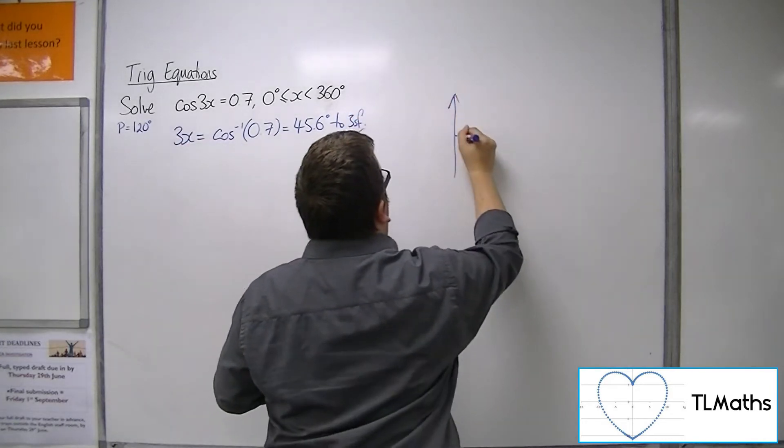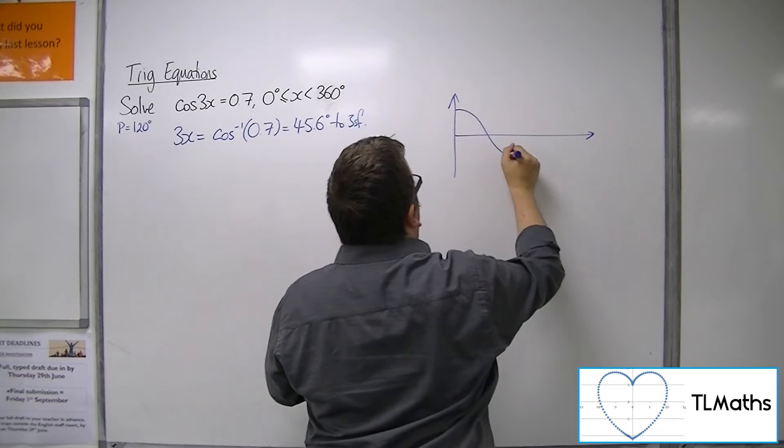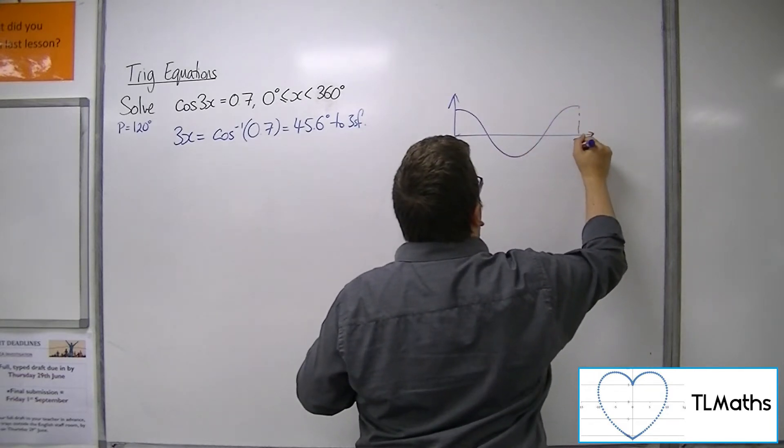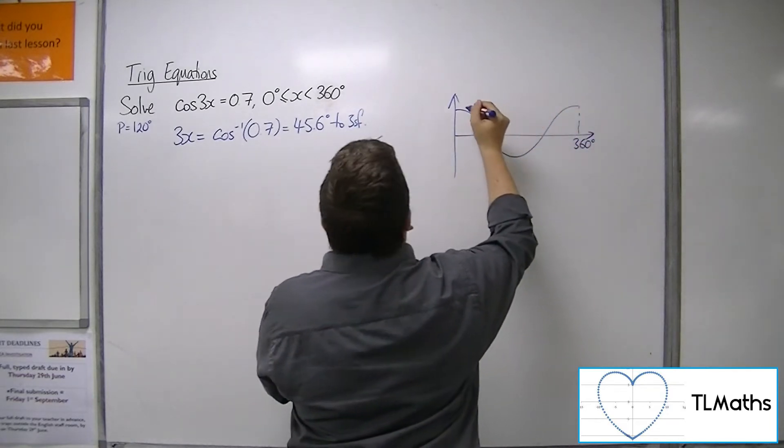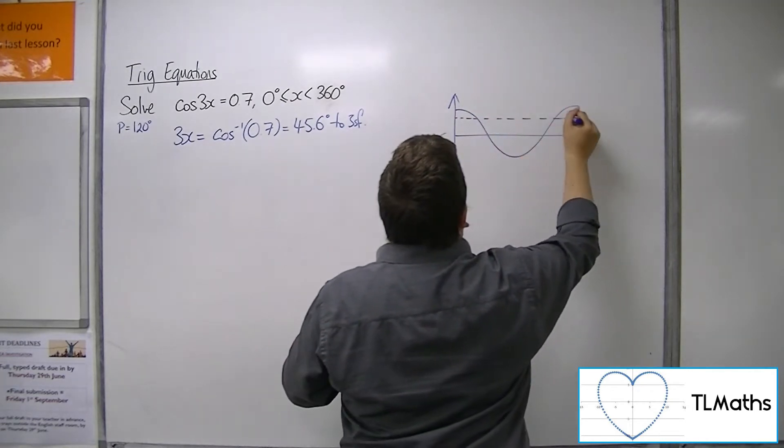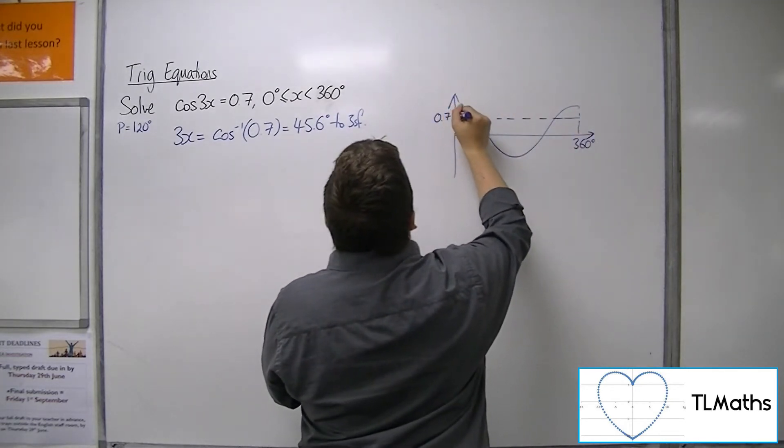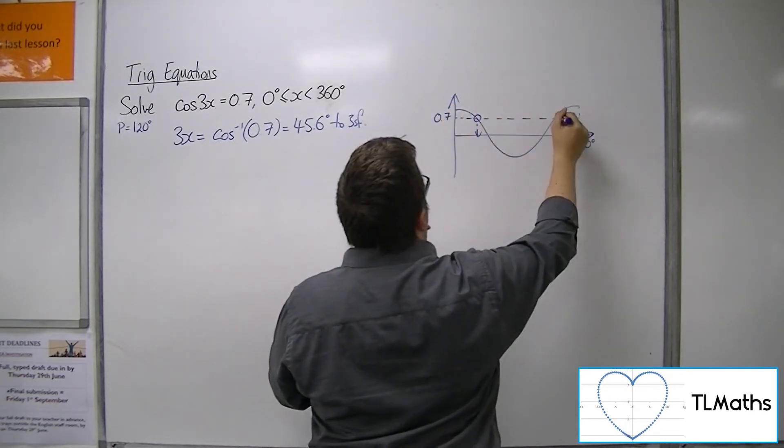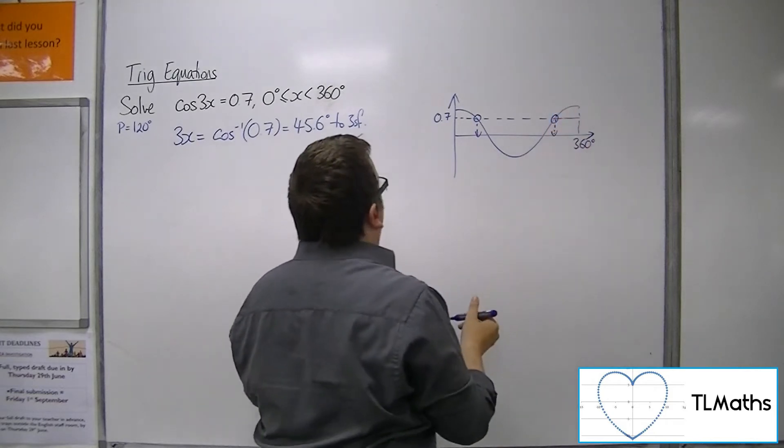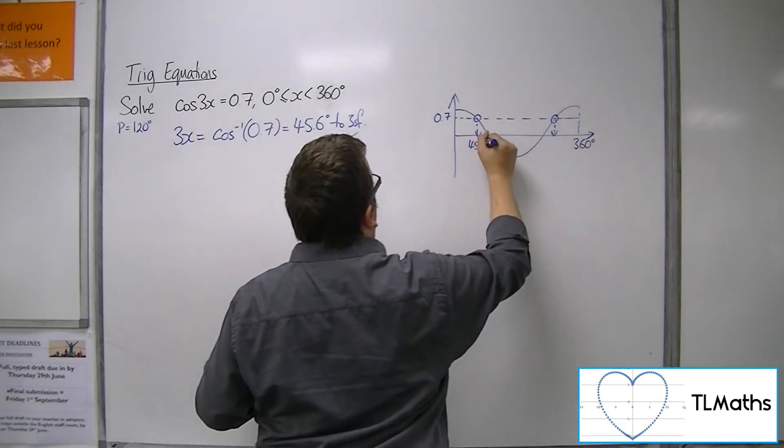So a quick sketch of cosine between 0 and 360. So 0.7 will give us two solutions. Okay, there's the first one, 45.6.